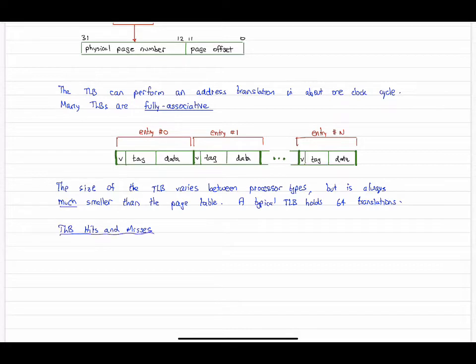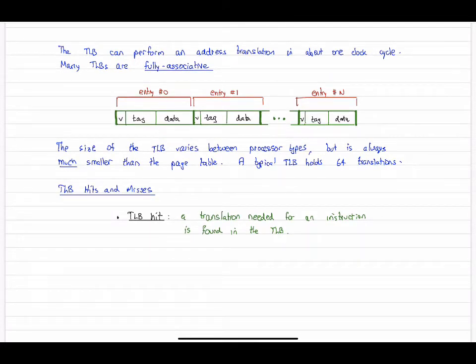Let's now check out what happens on TLB hits and misses. Starting with a hit, this is good. A translation needed for a particular instruction is there, it's in the TLB, and so we can snatch it out right away and proceed with the address translation.